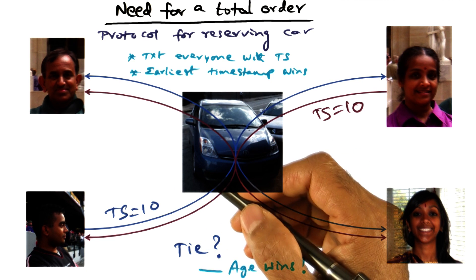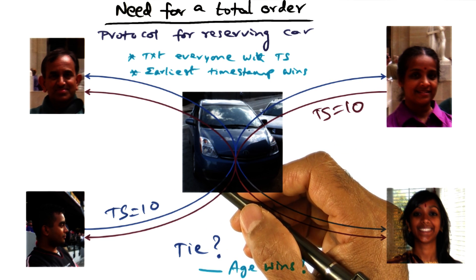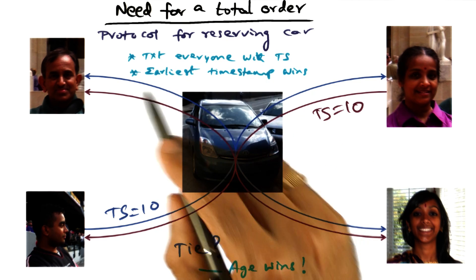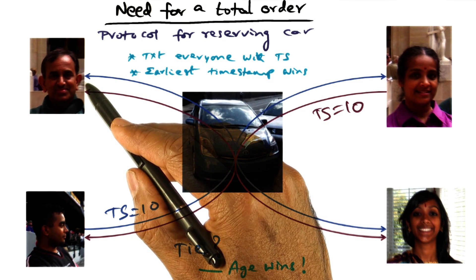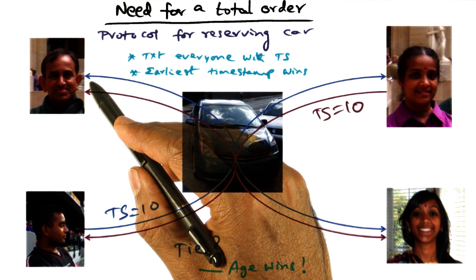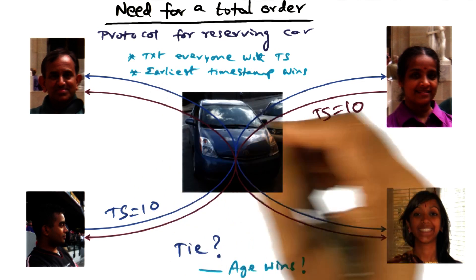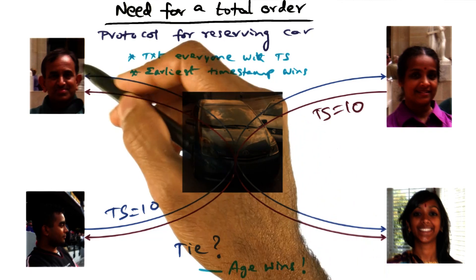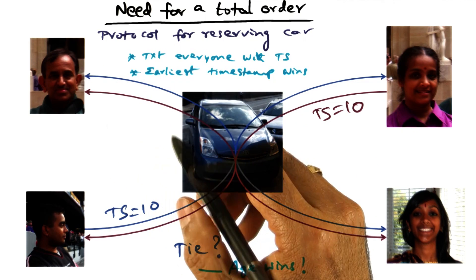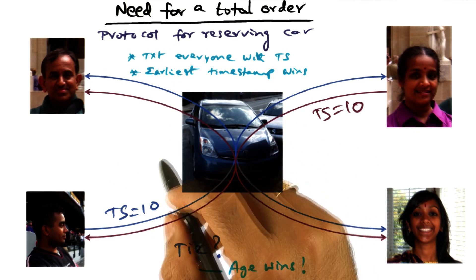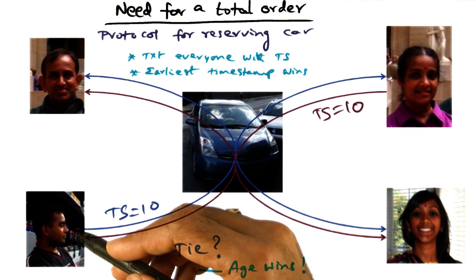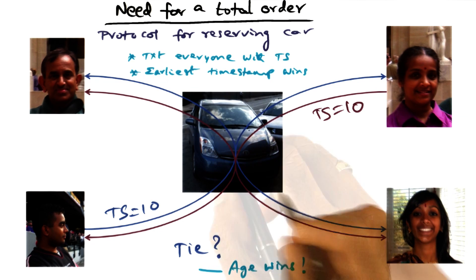Whenever we want to get the car for personal use, we're going to text everyone with a timestamp — a logical timestamp — associated with that request. My wife, son, and daughter all do the same thing.